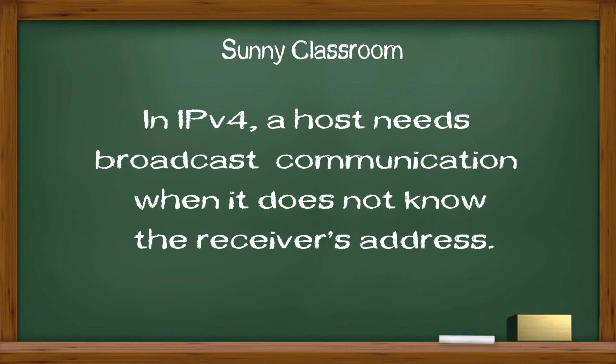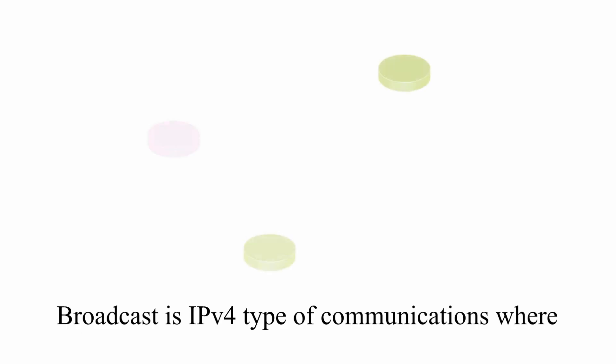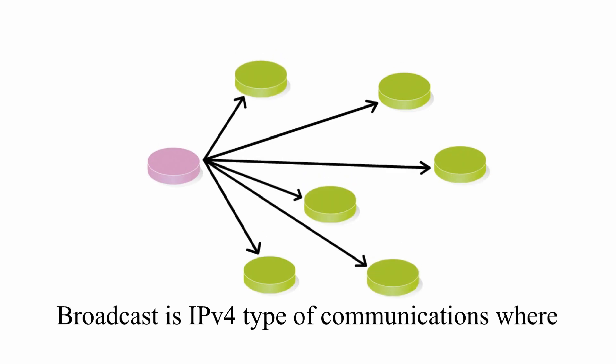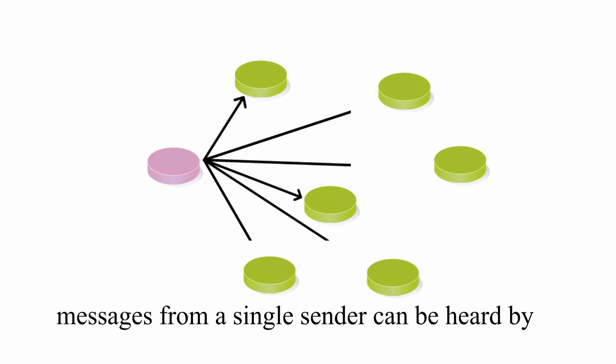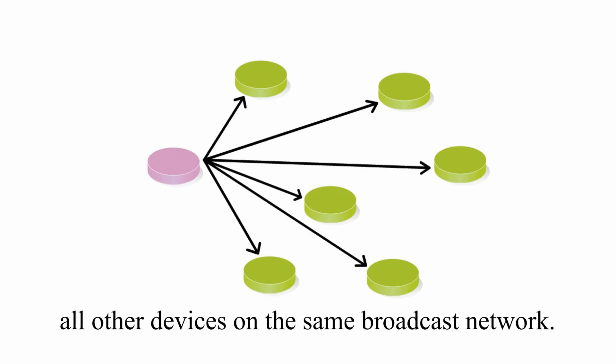In IPv4, a host needs broadcast communication when it does not know the receiver's address. Broadcast is an IPv4 type of communication where messages from a single sender can be heard by all other devices on the same broadcast network.